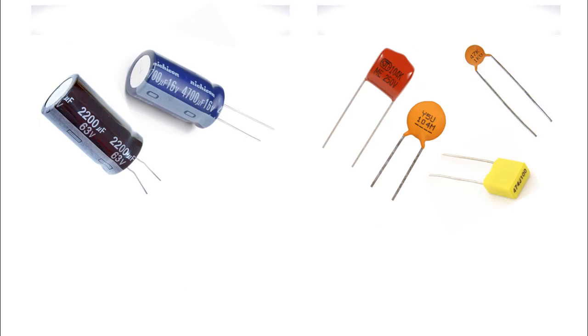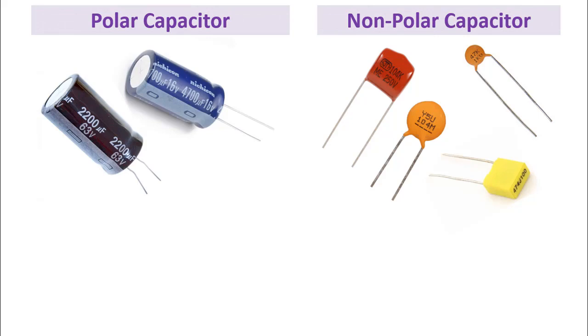Capacitors are examined in two groups as polar and nonpolar. There are positive and negative signs on the polarized capacitors. Therefore, the way it is connected to the circuit is important. The positive long pin must be connected to the direction of the current, while the negative short pin must be connected to the direction of the current.